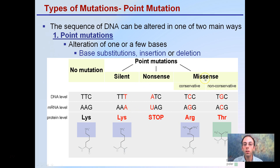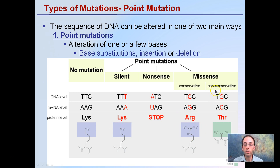Then there's missense — we have conservative and nonconservative. With TCC, we're noticing a change from our original TTC, and we're having a change at the protein level. In a conservative missense mutation, the resulting amino acid, while different, has similar properties to the original one. A nonconservative missense mutation has a very different set of properties and interactions, so it is more likely to have a negative impact than a conservative mutation.